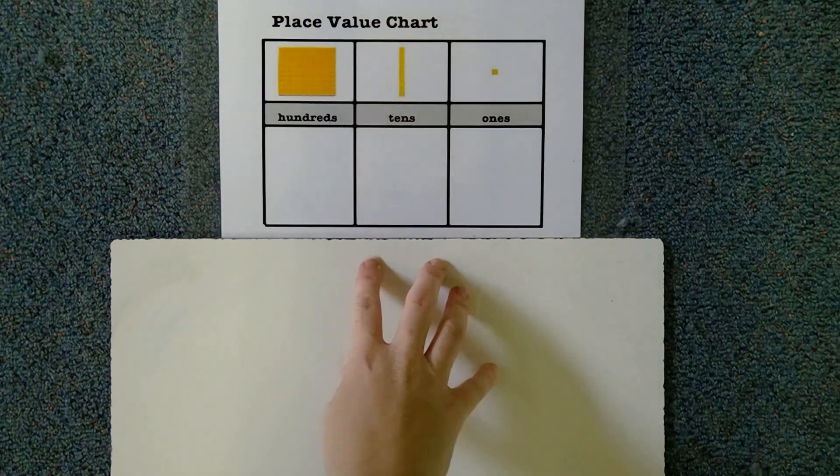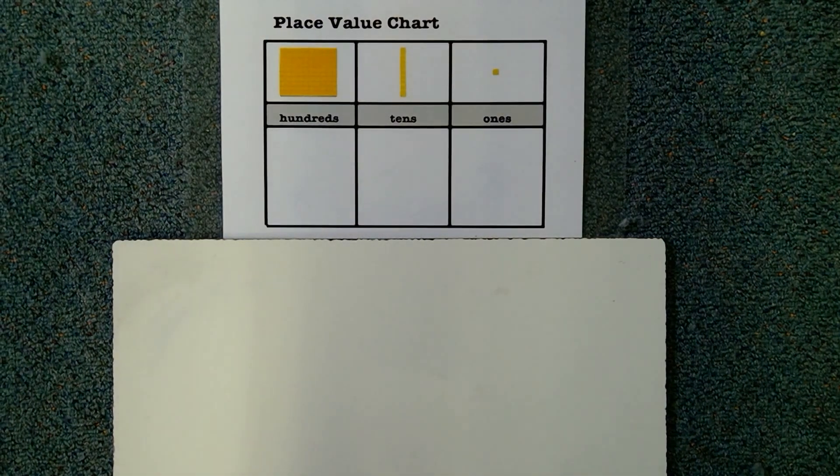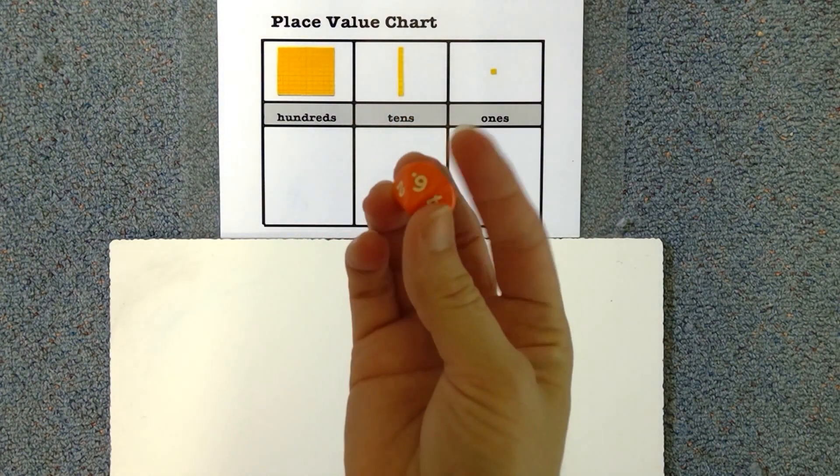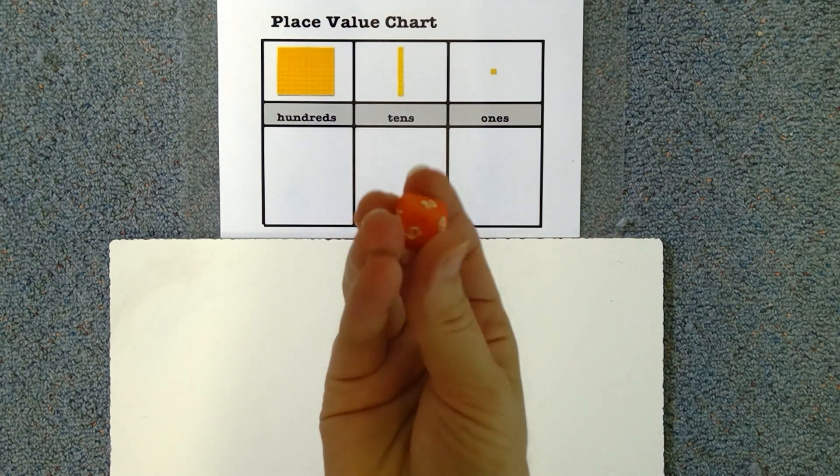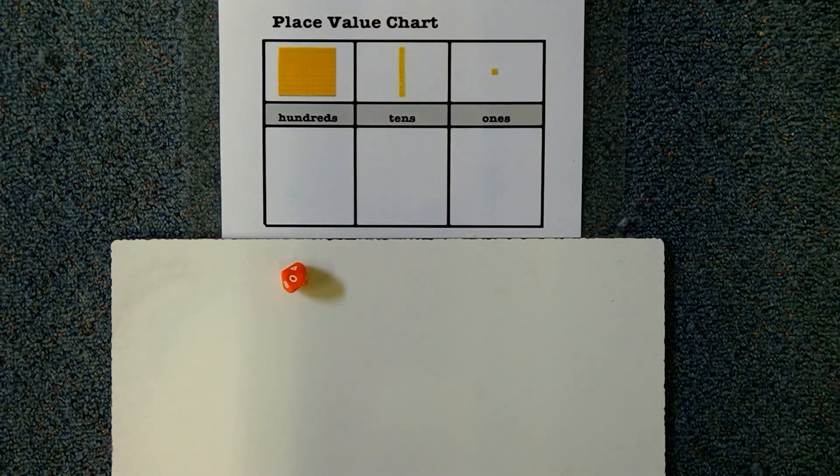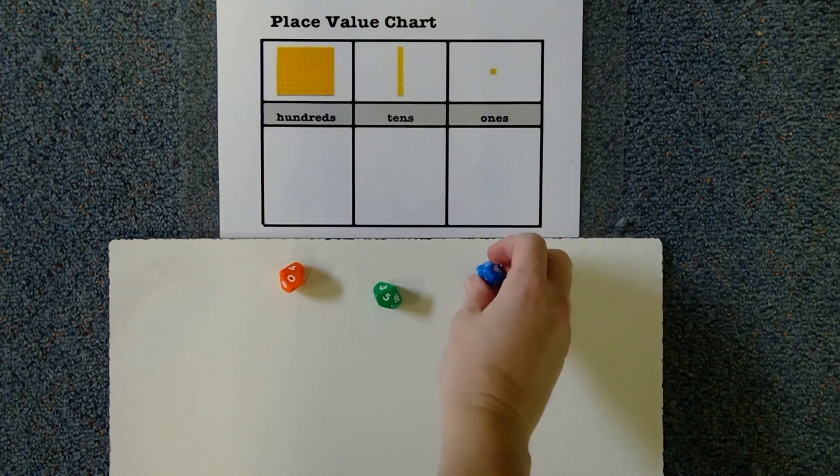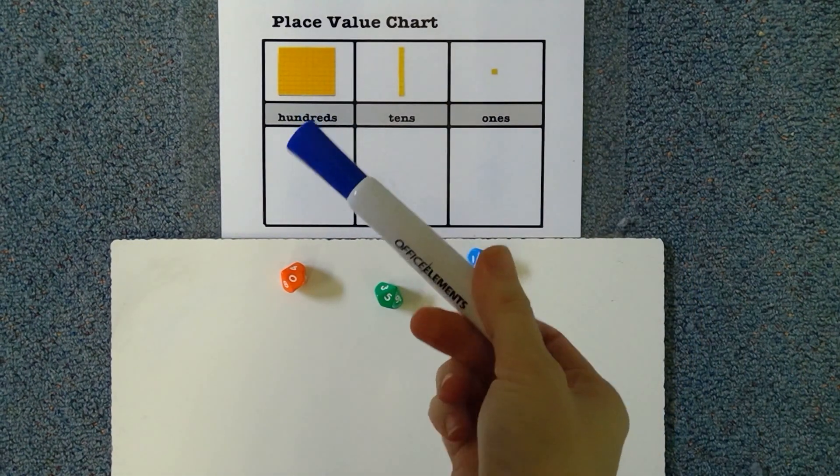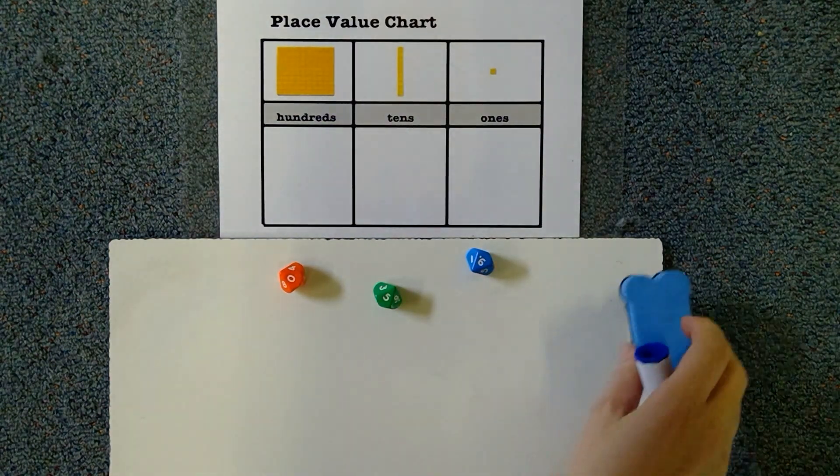Okay, so today you're going to need your whiteboard. You can use your place value chart if you need it and you're going to need three dice that have nine sides. So mine goes from zero to nine and I've got one for my hundreds, one for my tens and one for my ones. I've also got my whiteboard marker and a duster. I'm going to keep that to the side.